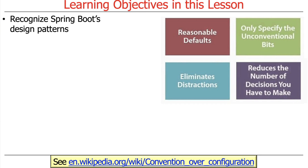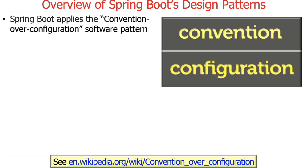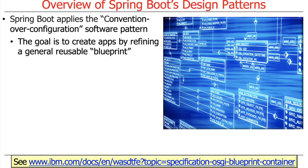We're going to talk about some of Spring Boot's design patterns — patterns that influence the way Spring Boot is designed. Probably the most important is something called convention over configuration, a pattern that Spring implements quite thoroughly and that drives the way it works. The goal is to make it possible to create production-grade web applications by refining general reusable blueprints, which evolved organically as people built software, noticed common things, and found ways to factor out common code and behaviors.